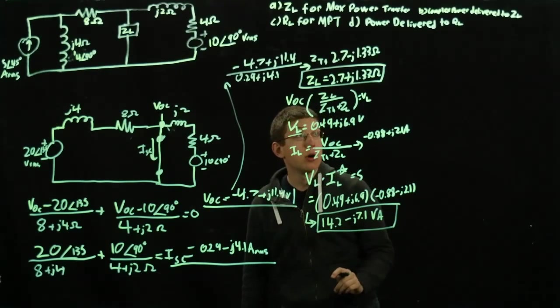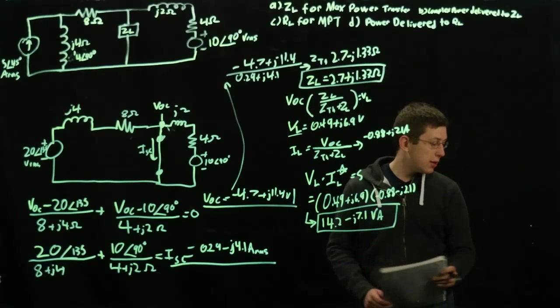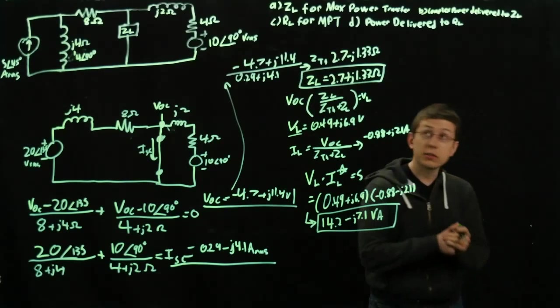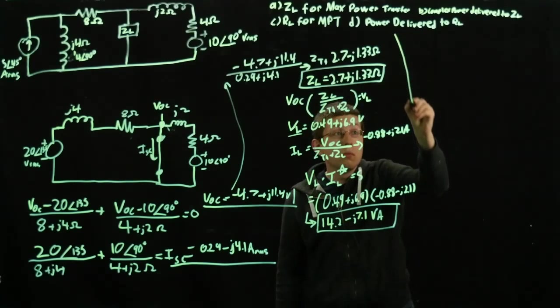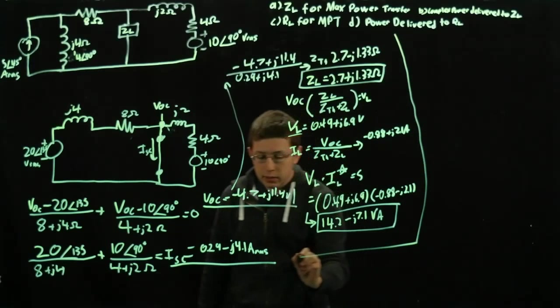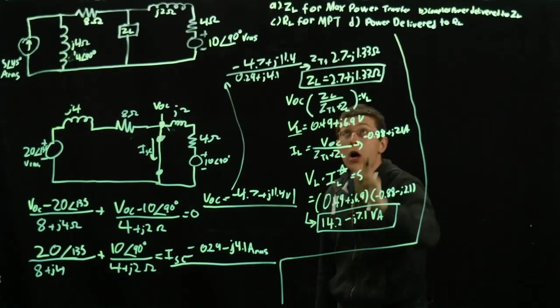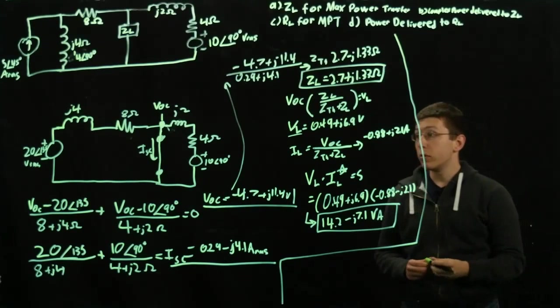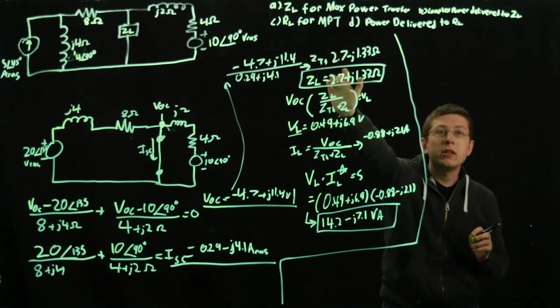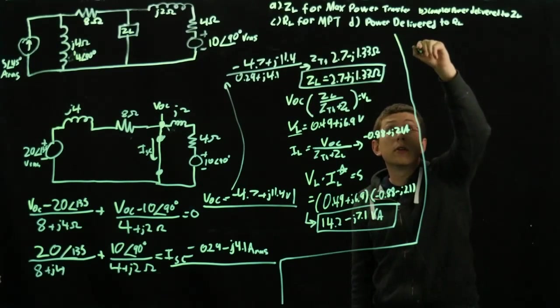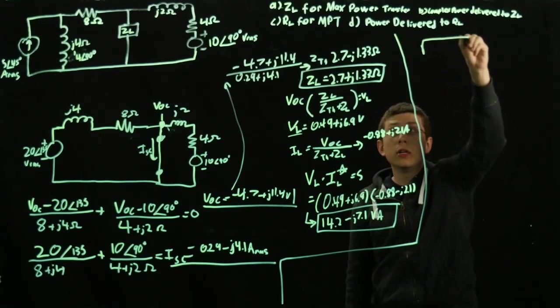That's part A and part B done. Now part C is pretty similar. However, we've already done most of the leg work for part C. Our RL for maximum power transfer, we're going to use pretty much our ZL. However, with an important difference, we're going to use the magnitude.